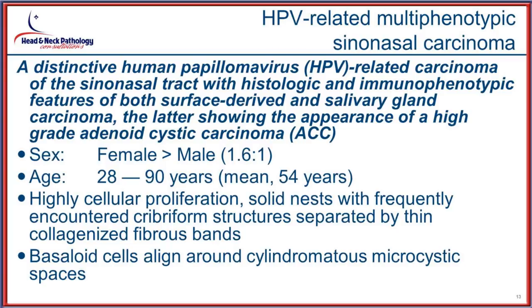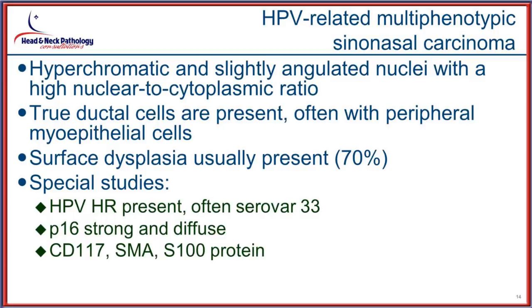It is more common in women than men, with a fairly broad age range but usually presenting in the middle decades of life. Histologically there is highly cellular proliferation, solid nests, frequently with cribriform structures, collagenized fibrous connective tissue stroma, basaloid cells aligning around cylindromatous microcystic spaces as expected in an adenoid cystic pattern, angulated nuclei, high NC ratio, true ductal structures, and surface dysplasia usually present. If there is ulceration or erosion, evidence of the surface dysplasia may not be present.